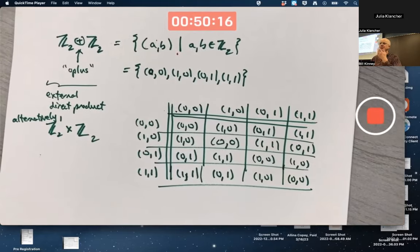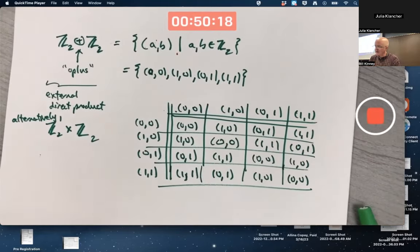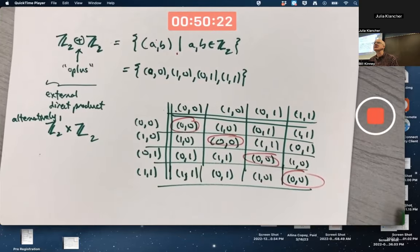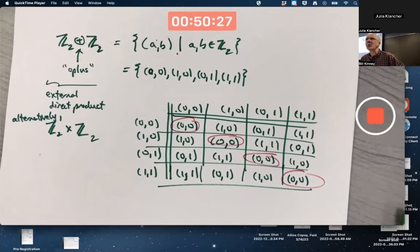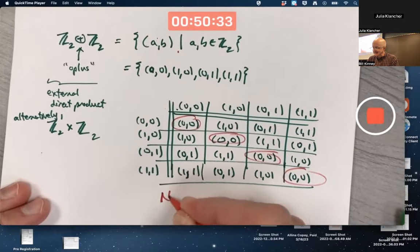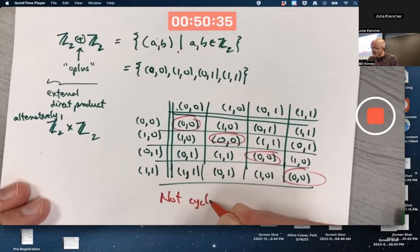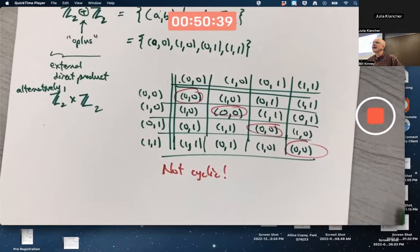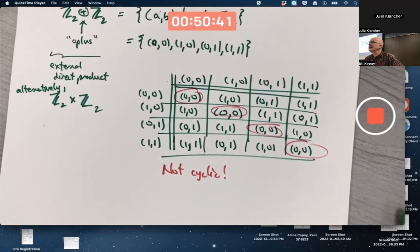This is a group of order four in which every element is its own additive inverse. Every non-identity element has order two, not four. It's not cyclic. It does not have a generator, and that's related to the example that classifies groups of order four.